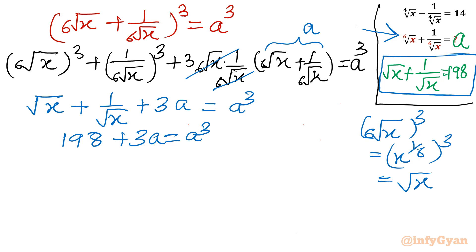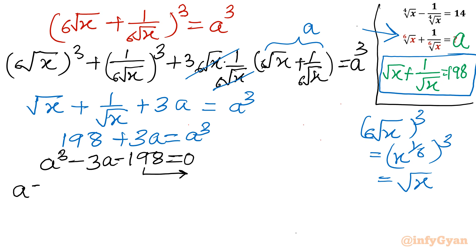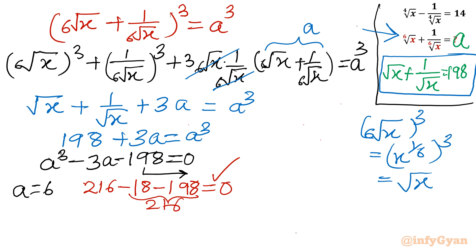Taking all terms to one side: a cubed minus 3a minus 198 equals 0. Using the rational root theorem, we check eligible factors of 198 — including plus or minus 1, 2, 3, 6, and so on. Trying a equals 6: 6 cubed is 216, minus 3 times 6 is 18, minus 198 gives 216 minus 18 minus 198 equals 0. So a equals 6 is our root.